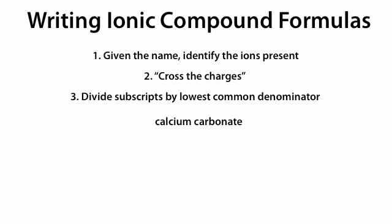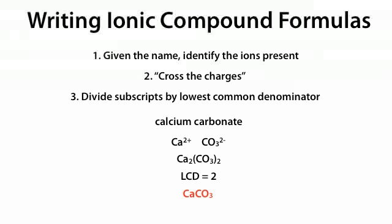Calcium carbonate: Ca2+ and CO32-. We cross the Ca2+ charge next to the CO3, and cross the 2- charge next to the Ca, giving us Ca2(CO3)2. The lowest common denominator is 2, so dividing each subscript by 2 we get CaCO3.